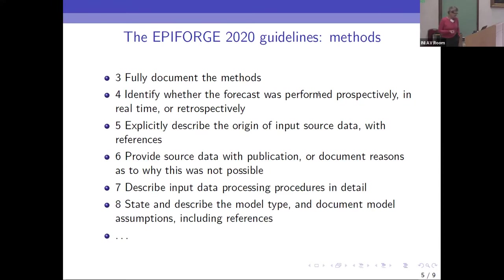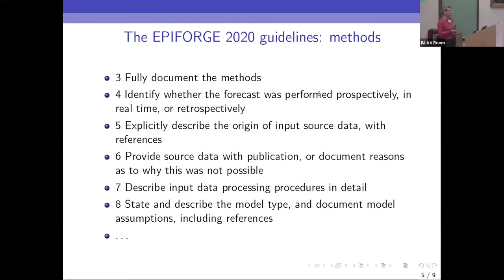It's a fun thing for mathematical scientists to discuss because we all have very different types of models, and there is a reference in the document to the types of models there might be. Also document the model assumptions, including references. If you're going to assume that nobody is going to change their behaviour at all — or if you're going to assume that South African scientists are smart enough to identify the Omicron virus but completely incompetent when it comes to assessing disease severity and unaware of age differences, which was essentially the assumption made in predictions by some groups in the UK — say that. Put your assumption in there and defend it.